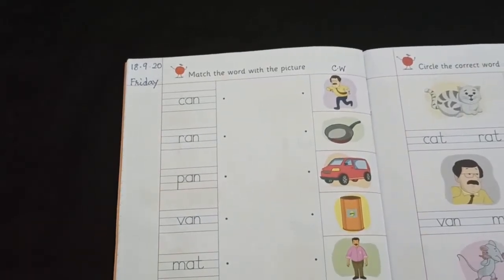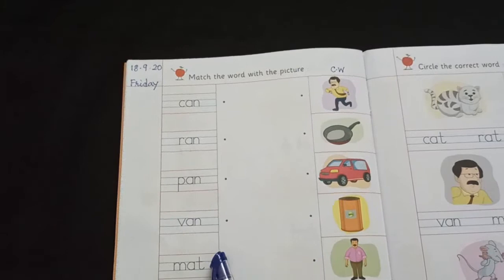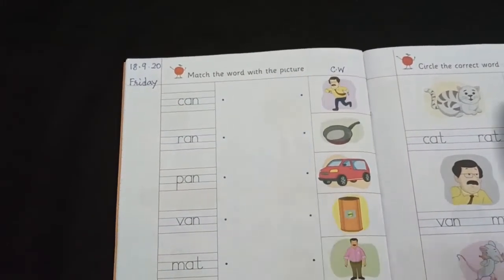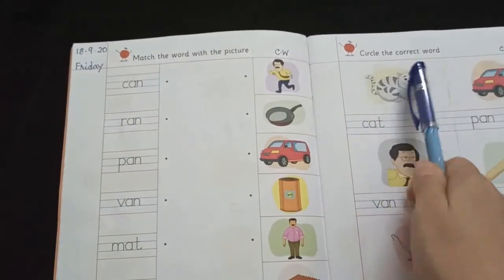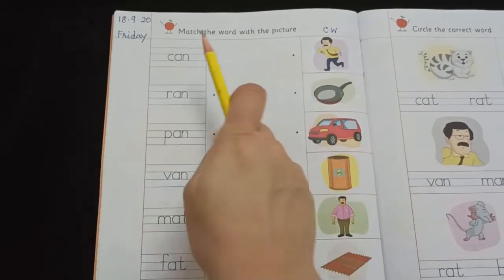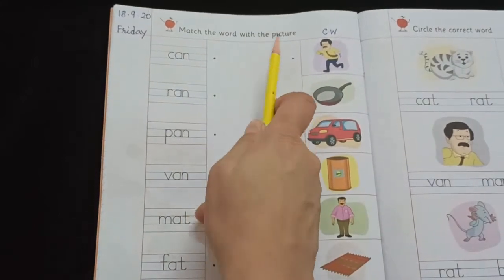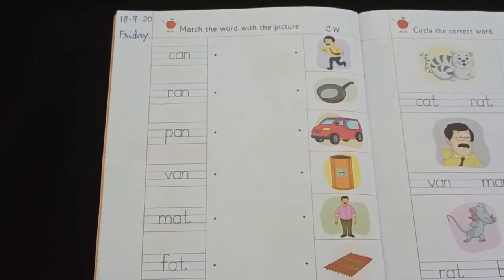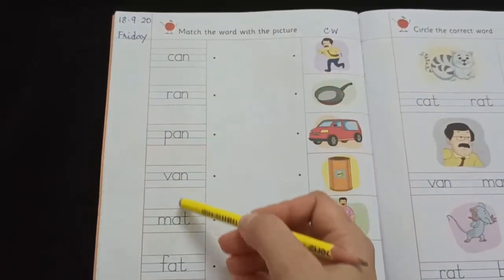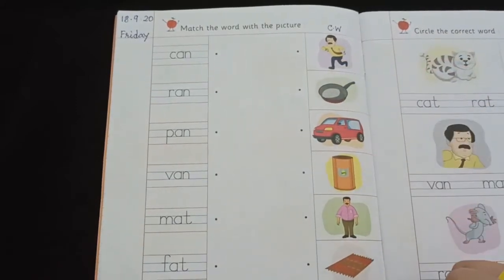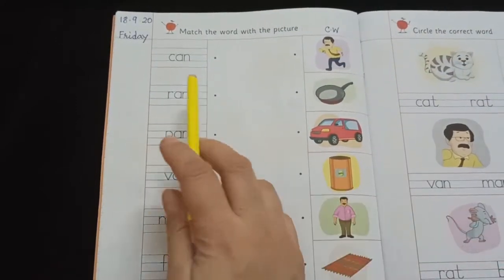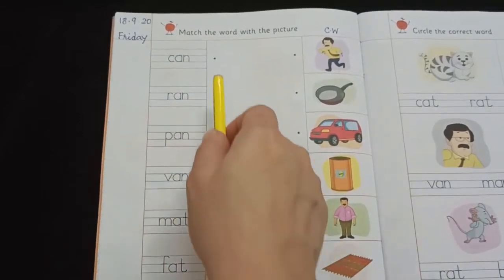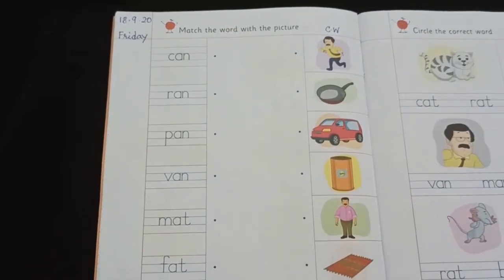So now we are going to do these two worksheets. First one is match the word with the picture. And second one is circle the correct word. First we will do match the word with the picture worksheet. We will join these words with their suitable pictures. First we will read these words one by one and then we will join them with their suitable pictures. Let's start.